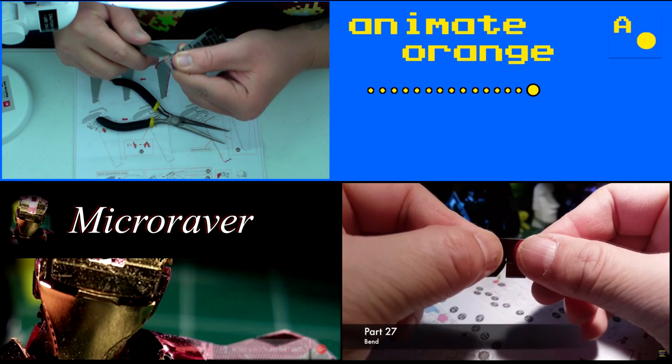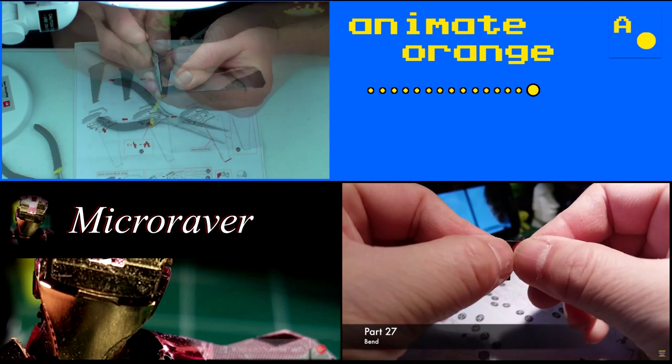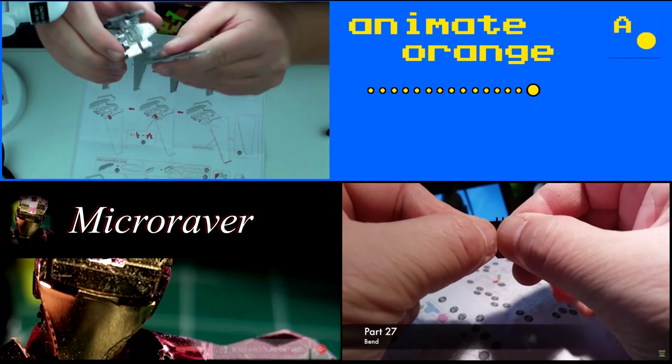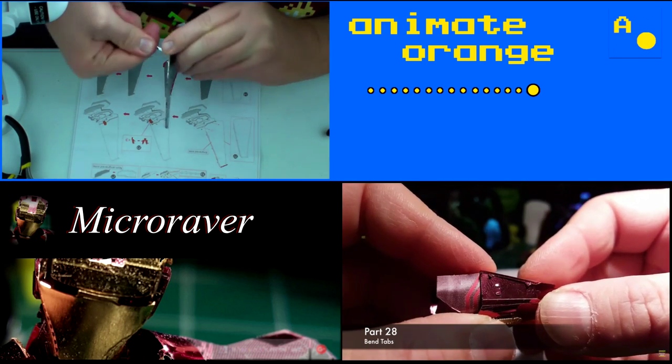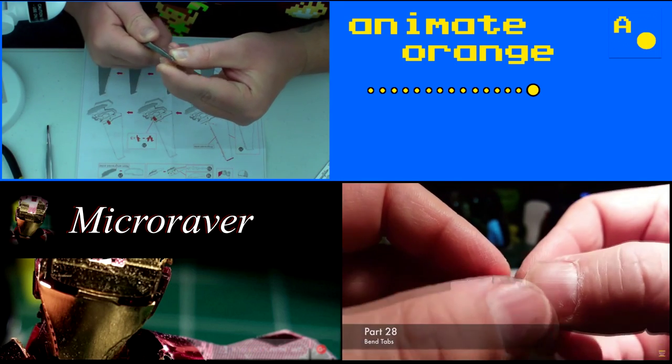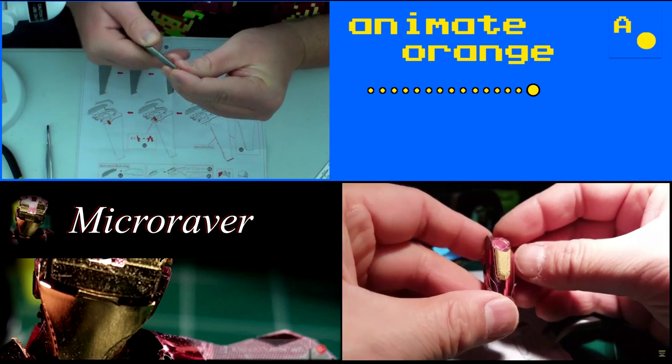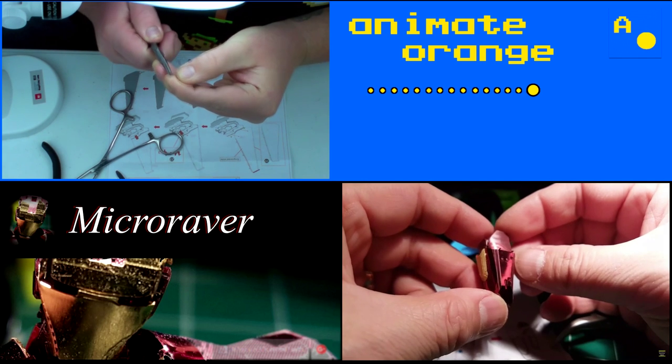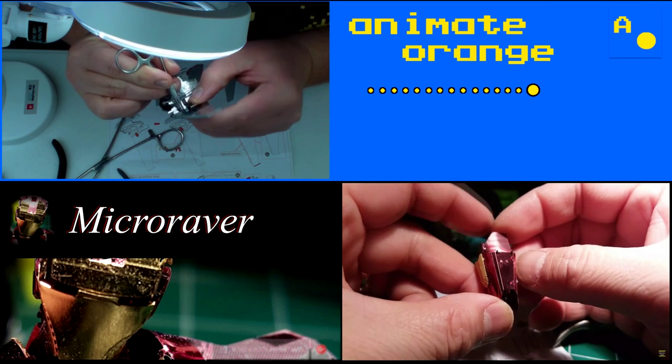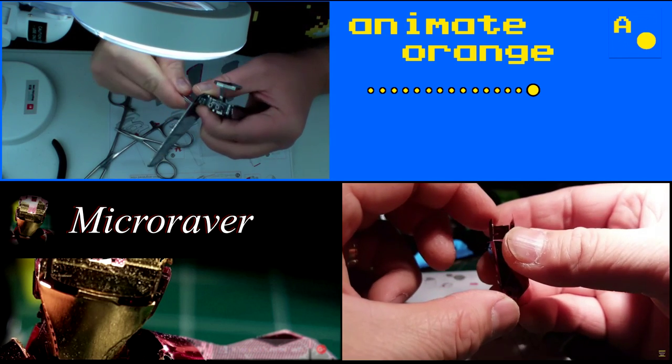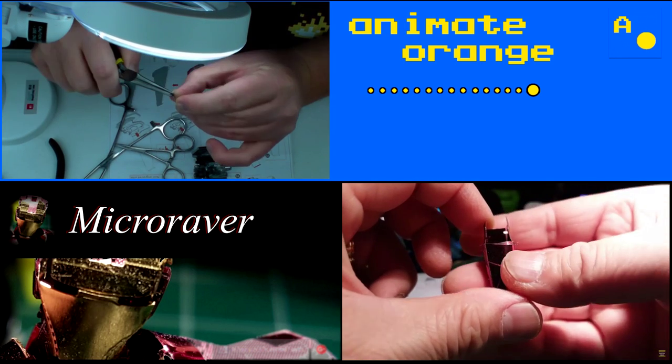I would highly recommend these two channels, Animate Orange and Micro Raver. They're really good at explaining the little details on each step. And also, the way that they film, you can see what they're doing. They put a lot of effort into making sure that you can tell what the heck is going on. I'll put the link to their channels in the description so you can check them out, subscribe to them.